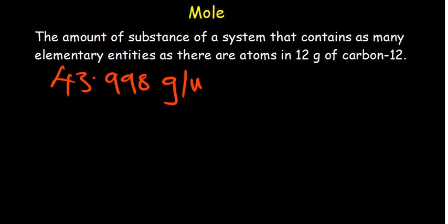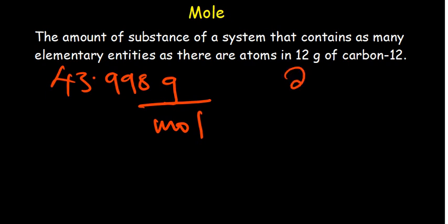That is the molar mass we found for carbon dioxide. We are given 2 grams of carbon dioxide, so how do we find the number of moles? We want the mole unit on top, so we flip the expression. Using dimensional analysis, we write 1 mole of CO₂ over 43.998 grams and multiply by 2 grams.